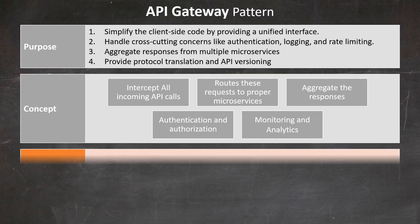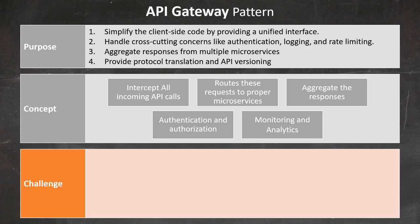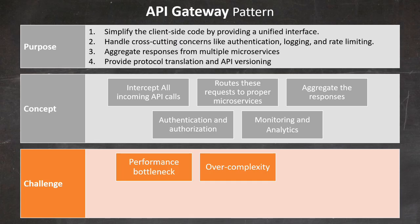Let's talk about the challenges associated with this pattern. First, performance bottleneck: if not properly designed, the API Gateway can become a single point of failure and a performance bottleneck — ensure proper scaling and caching mechanisms are in place. Second, over-complexity: adding too much business logic to the API Gateway can make it difficult to maintain and scale. Keep the Gateway focused on routing, aggregation, and cross-cutting concerns.